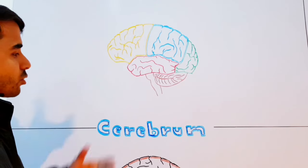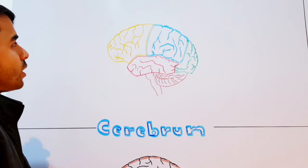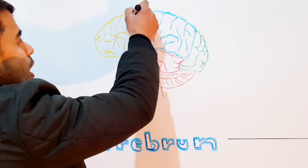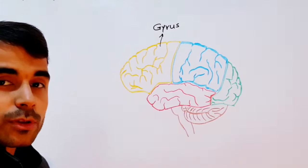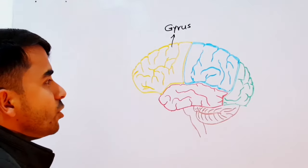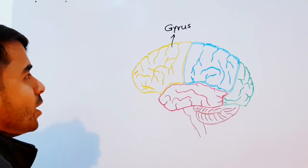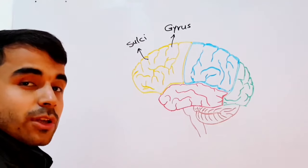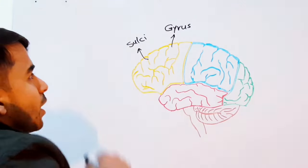When you look at the cerebrum you can see these swollen, bumped, protruding structures on the surface — these are called gyri (singular: gyrus). Each of these gyri are separated via shallow grooves called sulci (singular: sulcus). So these shallow grooves divide the gyri from one another.